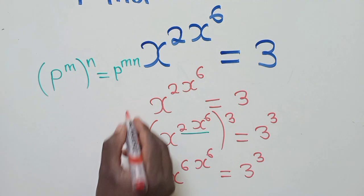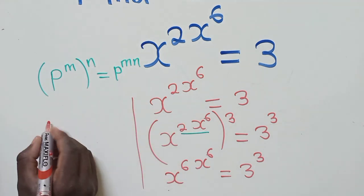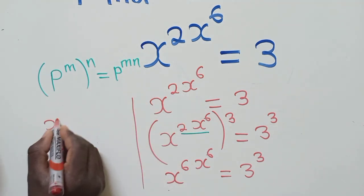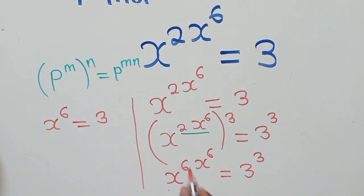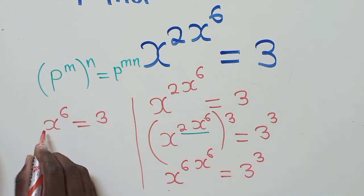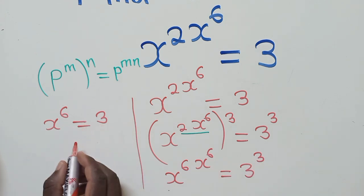So now from this point we come this side here. We shall say x power 6 is equal to 3. So x power 6 is equal to 3, and here x power 6 is equal to 3.